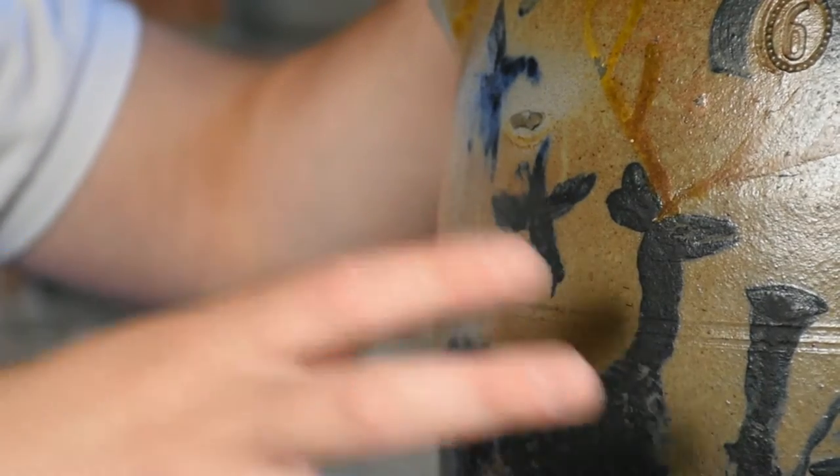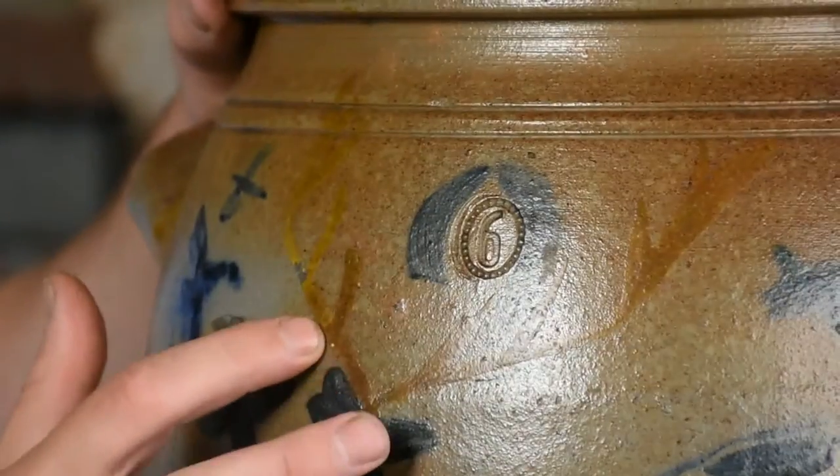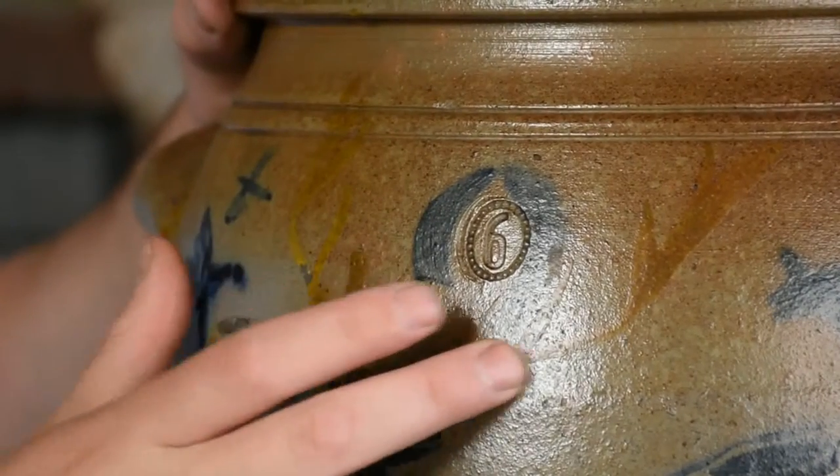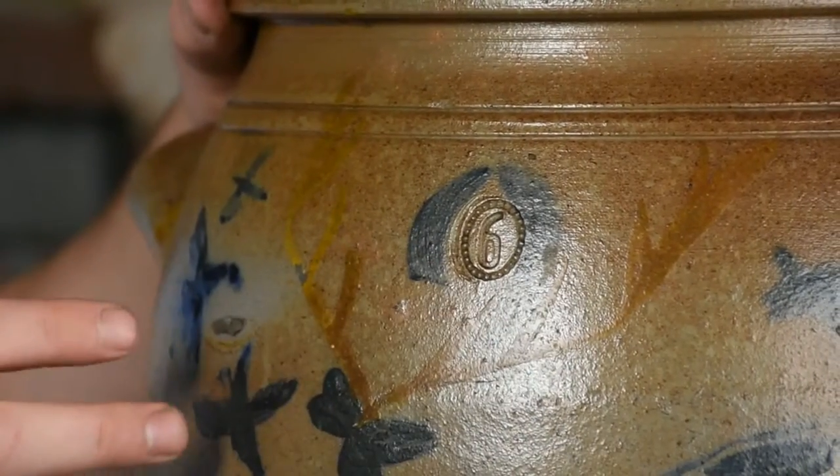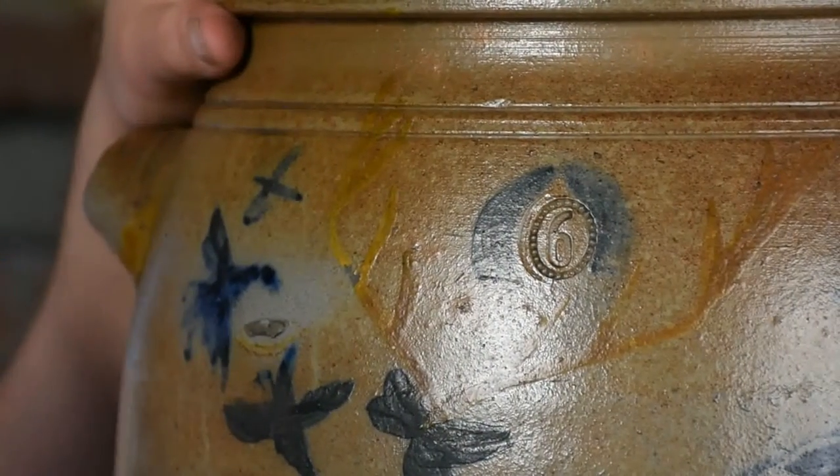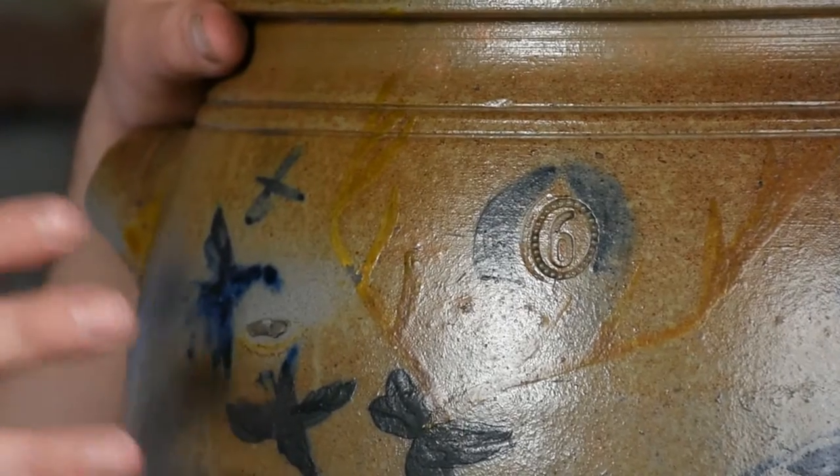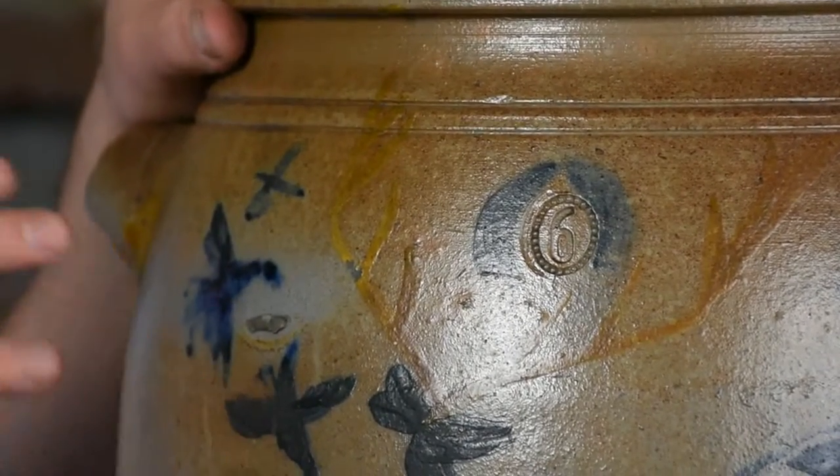And the deer is decorated with cobalt, but it has this ochre slip antler decoration above it. It's this huge rack done in either manganese or Albany slip. Really unusual decorative treatment. We've only seen that on a handful of other Morgantown pieces.